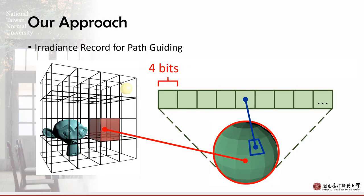Path guiding is a good method to get smooth images, but the biggest challenge of path guiding is how to quickly find and learn many important directions.